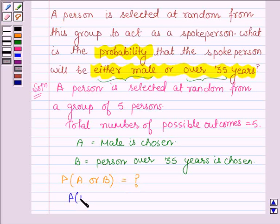Now, probability of A or B is given by probability of A plus probability of B minus probability of A and B.